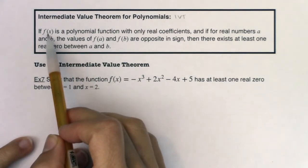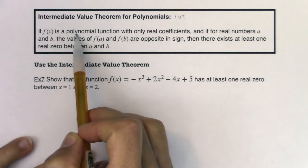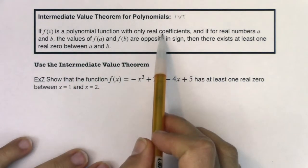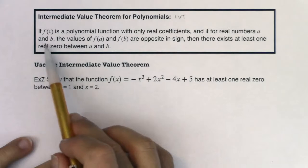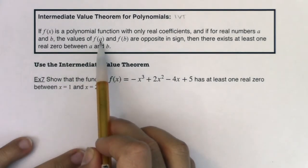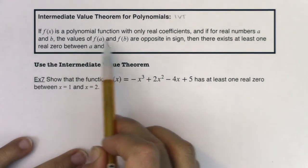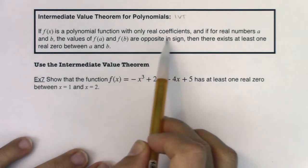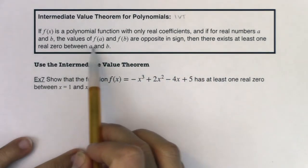It says, if f(x) is a polynomial function with only real coefficients, and if for real numbers a and b the values of f(a) and f(b) are opposite in sign, then there exists at least one real zero between a and b.